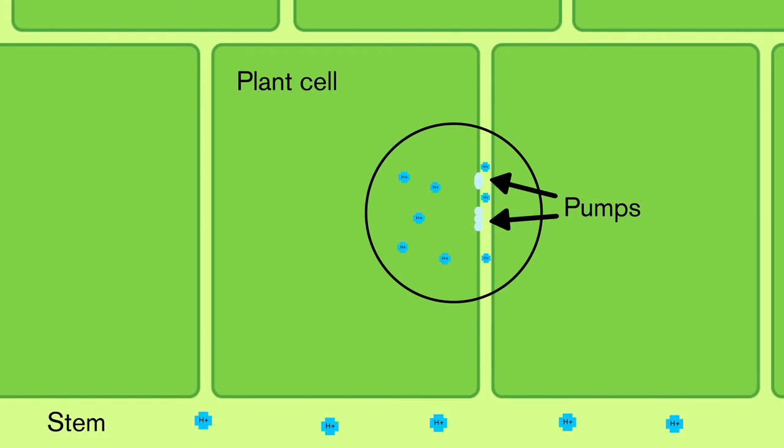These gradients represent potential energy that can be used by cell transporters to bring nutrients in and out of a cell.